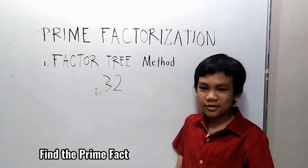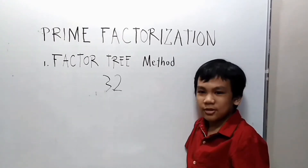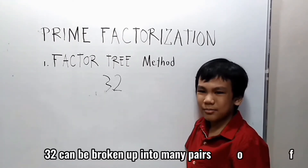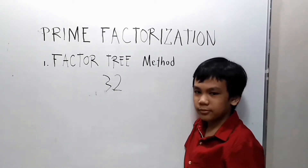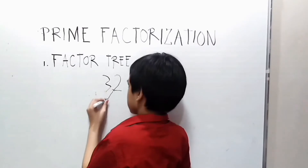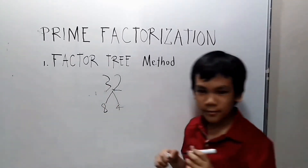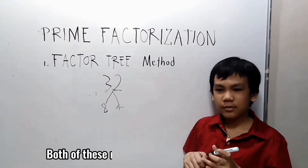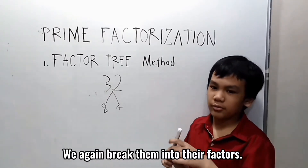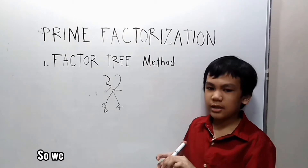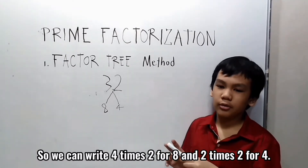Find the prime factorization of 32 as our example. 32 can be broken up into many pairs of factors. Let's start with 8 times 4. Both of these numbers are composite numbers, so we are going to break them into their factors. We can write 4 times 2 for 8, and 2 times 2 for 4.